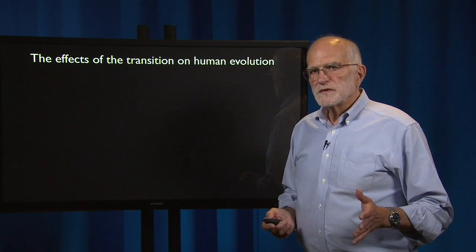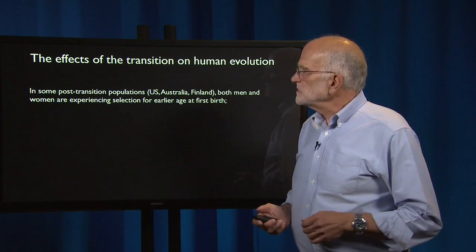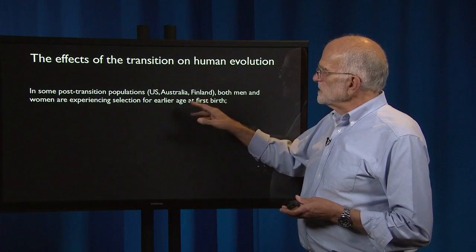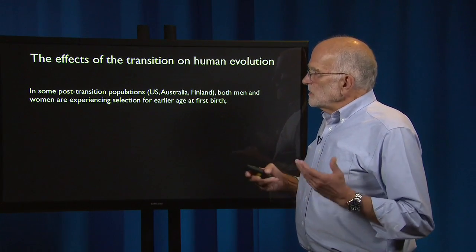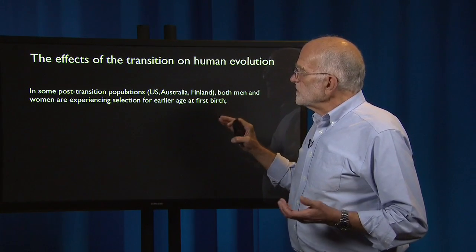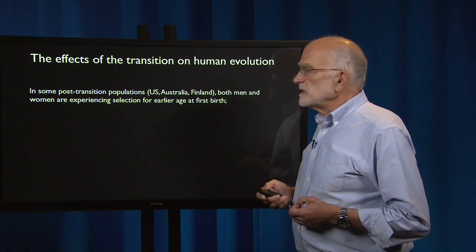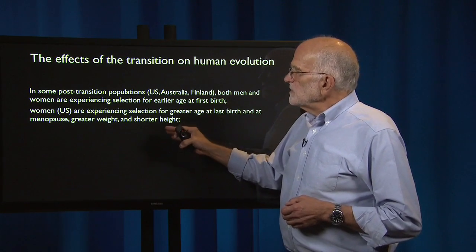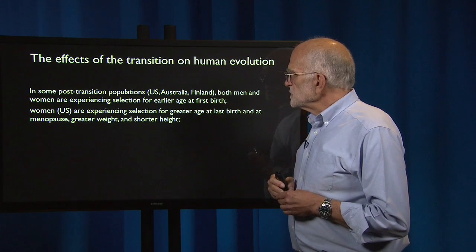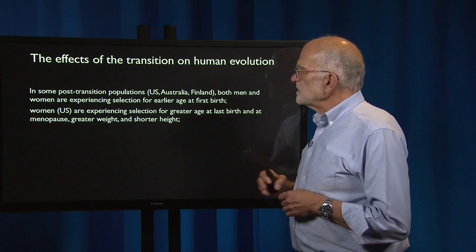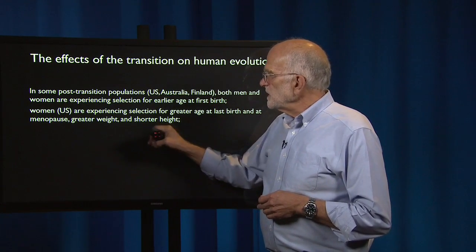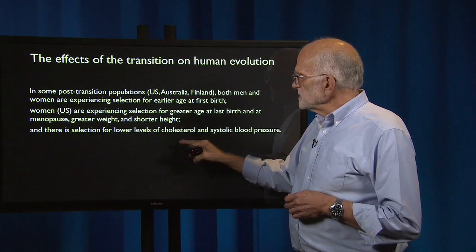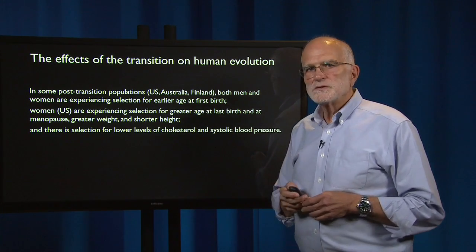The transition has major effects on human evolution. In some post-transition populations — for example, the US, Australia, and Finland — researchers found that both men and women are experiencing selection for earlier age at first birth. Women in the US are also experiencing selection for greater age at last birth and at menopause, greater weight, and shorter height, as well as selection for lower levels of cholesterol and systolic blood pressure.